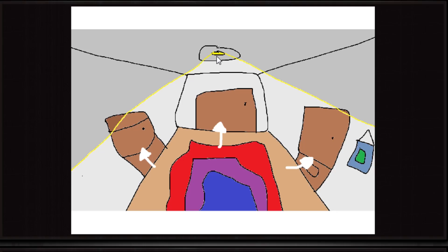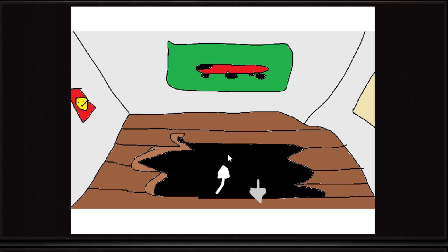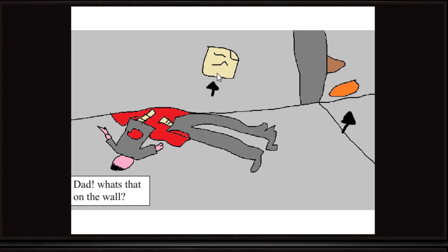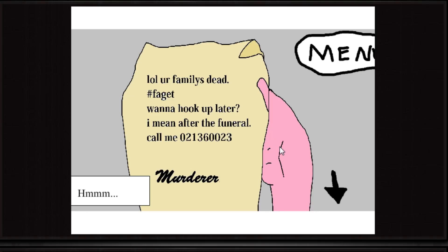Is that the sun? Is the sun in the lightbulb? Is he looking at me? Neee! Um, there's a hole in the floor. Cough, it's dusty down here. In the hole. That leads to the staircase. Dad? What's that on the wall? Lol or family's dead? Hashtag faggot. Wanna hook up later? I mean, after the funeral. Call me. Murderer.